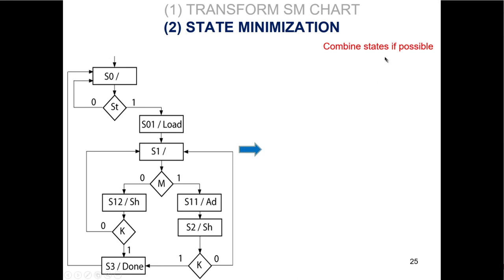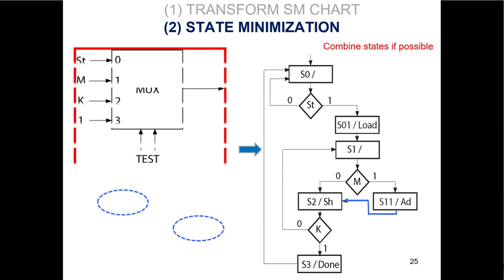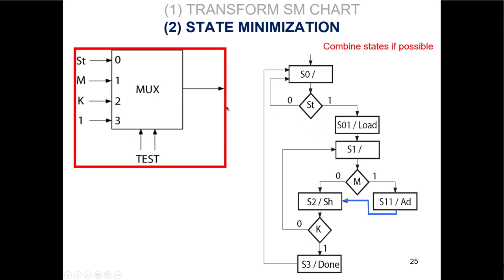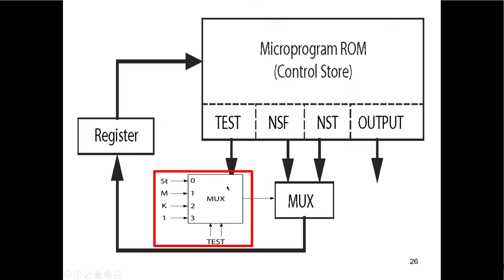We can do state minimization: states s2 and s1.2 do the same thing, so we combine them. Our test is then two bits: start, m, and k with a default. We have three two-to-one multiplexers — one for each bit of the next state. What does the ROM have to be? You need three bits for the state input, two bits for test output, three bits for next-state-false, three bits for next-state-true, plus the four output signals: load, add, shift, done. That gives a ROM size of 6 rows (six states mapped to 3-bit addresses, so eight-row ROM) by 12 columns.